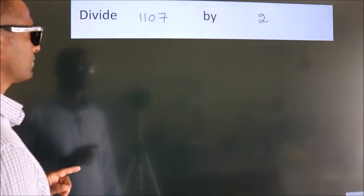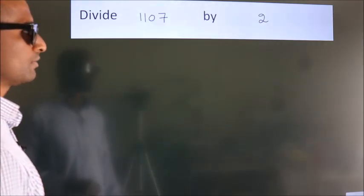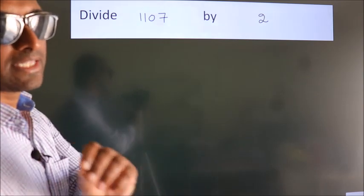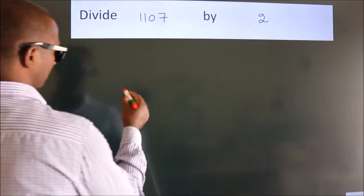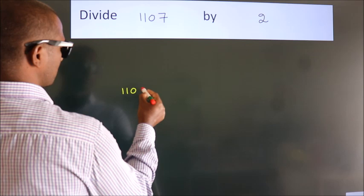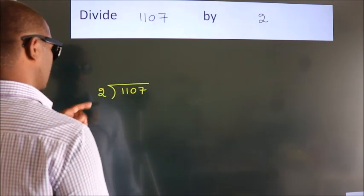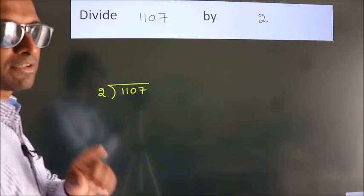Divide 1107 by 2. To do this division we should frame it in this way. 1107 here, 2 here. This is your step 1.